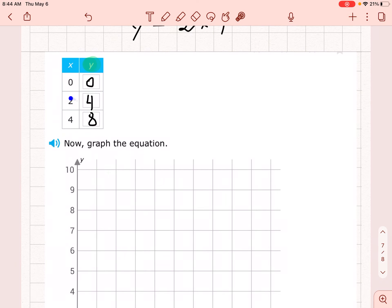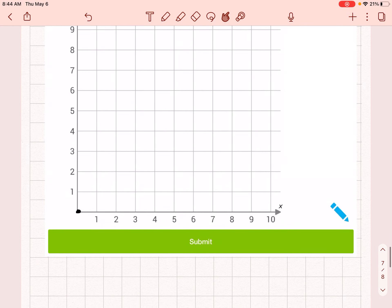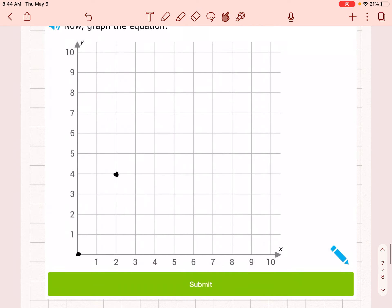When x is 2, y is 4. So I'm going to go over to 2—1, 2—and then count up 4: 1, 2, 3, 4.